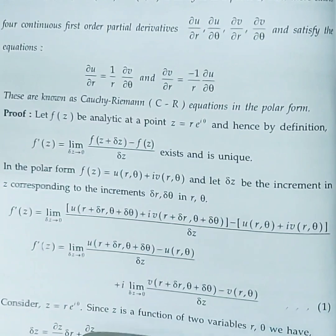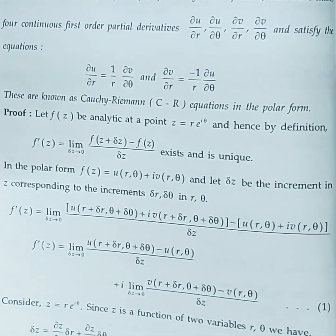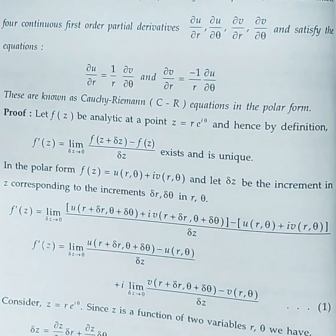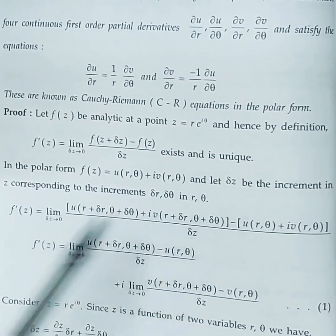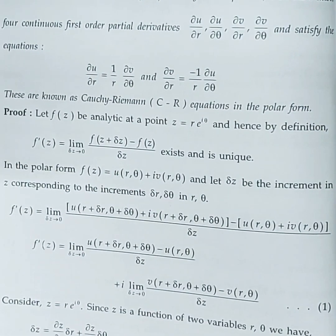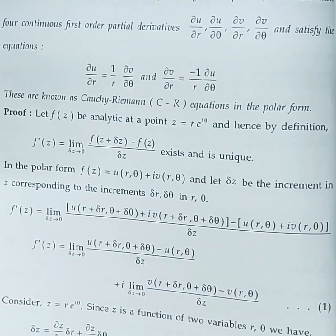Now, in Δz there is a small increment. Since it is in polar form, r and θ, the corresponding increments are Δr and Δθ in r and θ respectively. In polar, we have Δr and Δθ just as we had Δx and Δy in Cartesian. If you are thorough with the Cartesian proof, it is easy to follow this polar version.